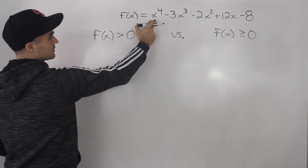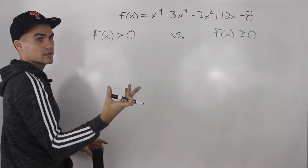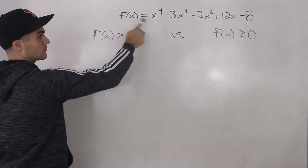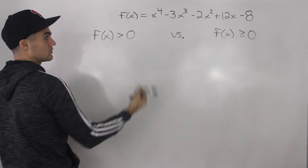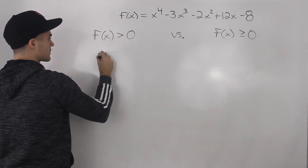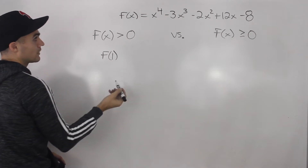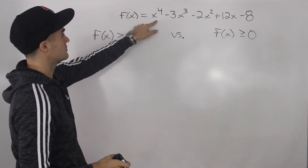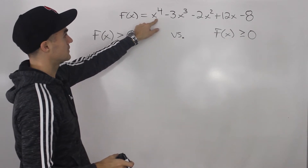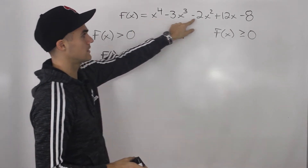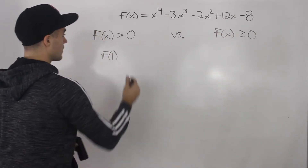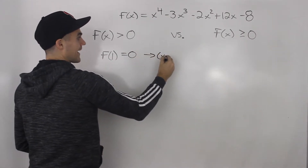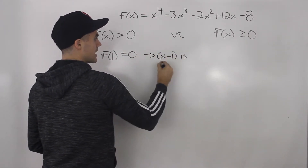First, we have to factor this polynomial like usual. We can't take out any constants or variables, so we're going to have to use the factor theorem. We plug in f of 1: 1 minus 3 minus 2 plus 12 minus 8, which nets out to 0. Since f of 1 is 0, we know that x minus 1 is a factor.